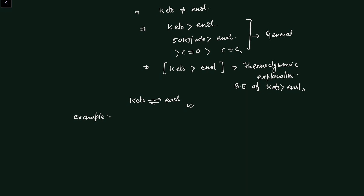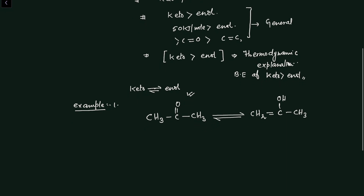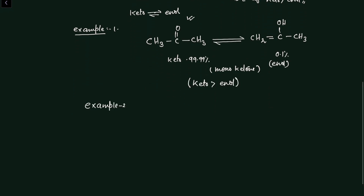Example one: keto-enol tautomerism of propanone. The structure of propanone is CH₃–CO–CH₃, and its enol form is CH₂=C(OH)–CH₃. When we do the calculation, we find that the keto content in this compound is 99.99% and the enol content is 0.01%. So this is a case of mono-ketones where the keto form is more stable than the enol form.